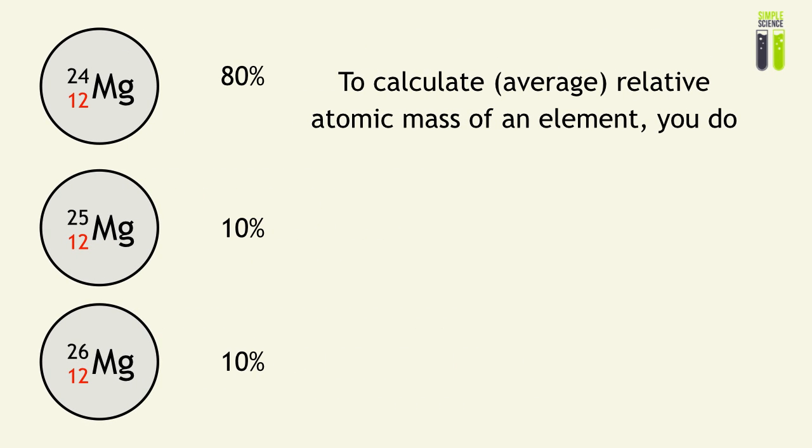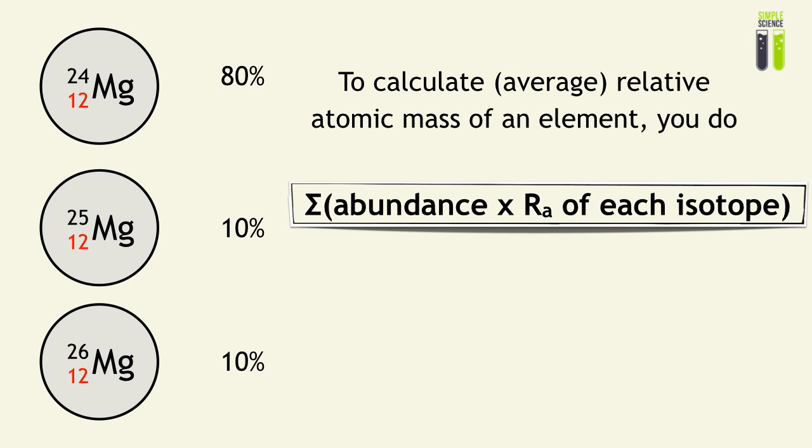And I want to show you how we're going to calculate the average relative atomic mass of an element. You do this formula, that is the sum of the multiplications of the abundance values and the relative atomic mass of each isotope.